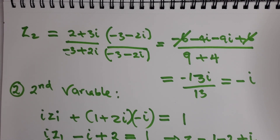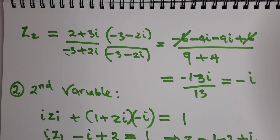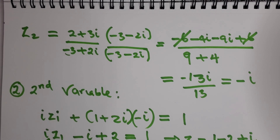That was a little bit of a headache, but z1 equals one plus i. So the solutions are: z1 equals one plus i, and z2 equals negative i. You can verify to find out if that's correct. Thanks for your time.